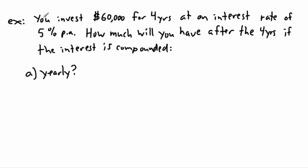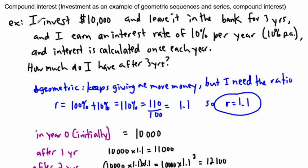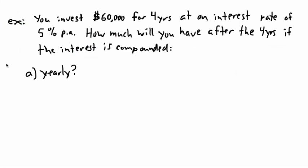Let's look at an example. You invest $60,000 for four years at an interest rate of five percent per annum (per year). How much will you have after four years if the interest is compounded yearly? We'll also look at what happens if it's compounded monthly. We'll use the equation A equals P times (1 plus i) to the power of n.